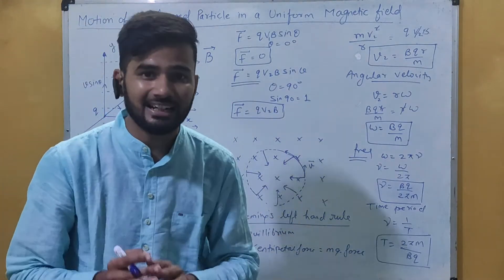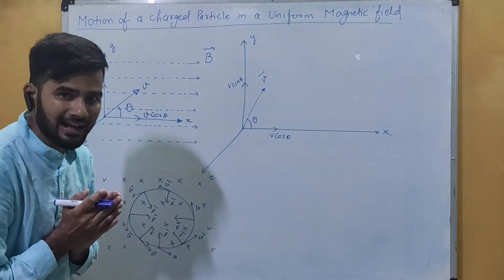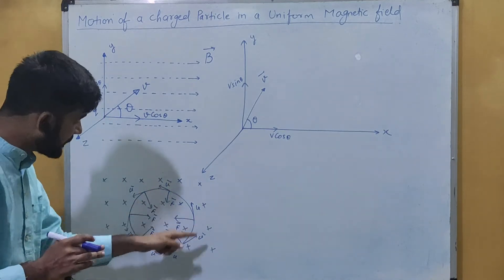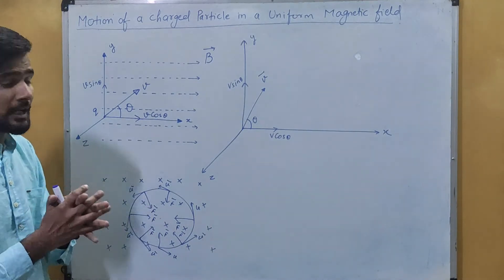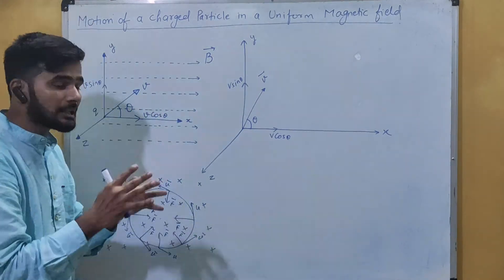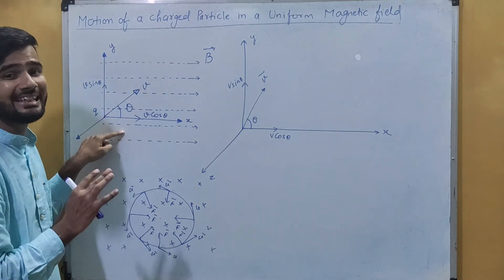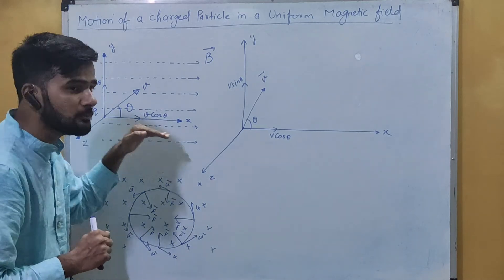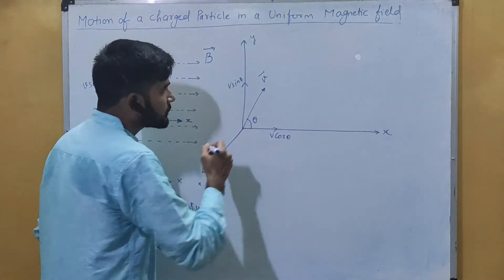We have seen that the v sin theta component causes the particle to move in a circle. Now, what is the effect of the second component, v cos theta? When a particle moves along the field, the force is zero. This means the magnetic field causes no deviation for this component, but the particle still moves forward due to this velocity. So v sin theta makes the particle move in a circle, while v cos theta makes it advance linearly.